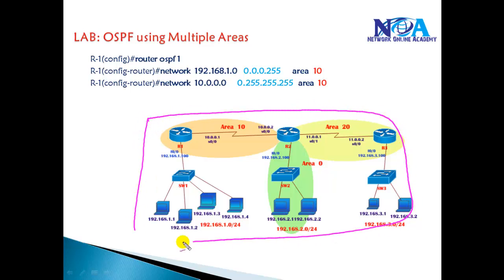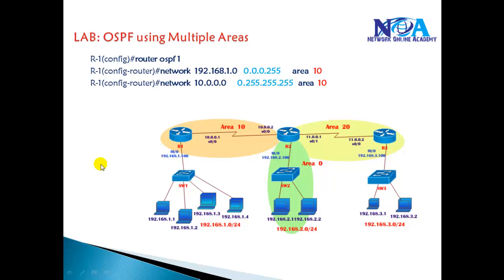If you have around 30 to 40 routers, we can still go with a single area without many OSPF issues in big networks. But here we're not going to connect 30 to 40 routers — we'll use the same three routers just to verify the multiple-area lab.